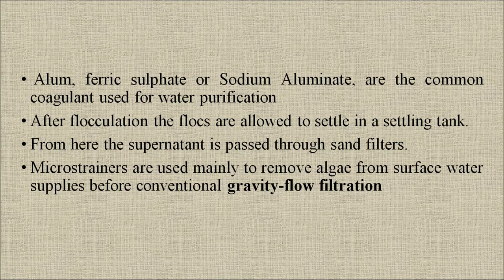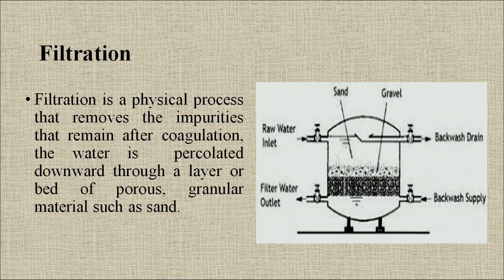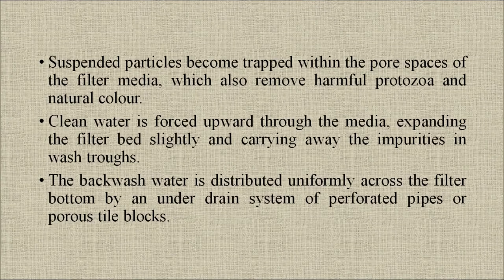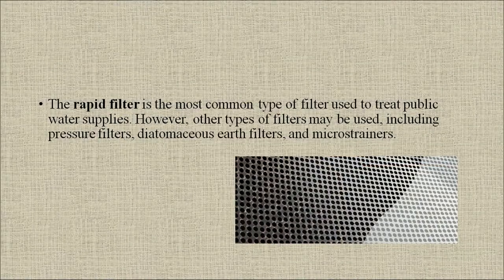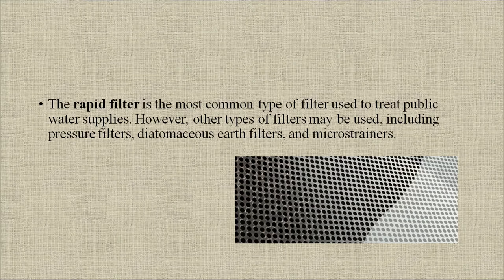Micro strainers are used mainly to remove algae from surface water supplies before conventional gravity flow filtration. Filtration is a physical process that removes impurities remaining after coagulation. The water is percolated down through a layer of porous granular material such as sand. Suspended particles become trapped within the pore spaces of the filter media, which also remove harmful protozoa and natural color. The rapid filter is the most common type used to treat public water supplies; other types include pressure filters, diatomaceous earth filters and micro strainers.